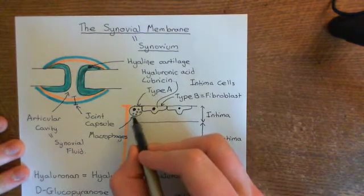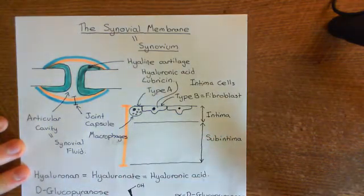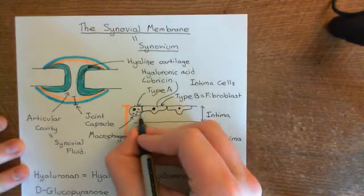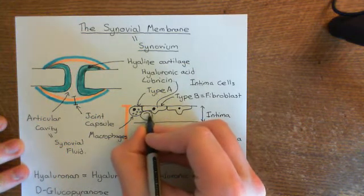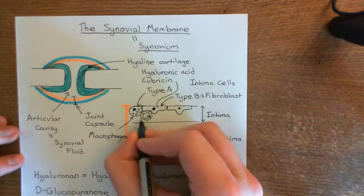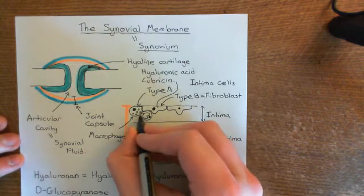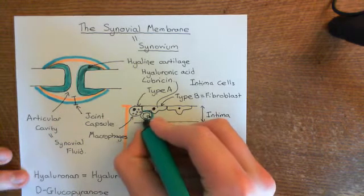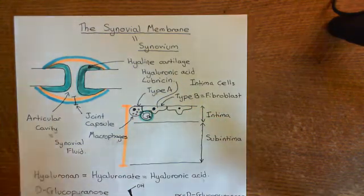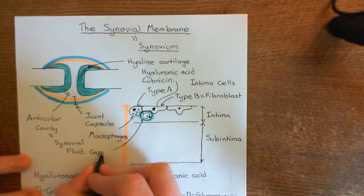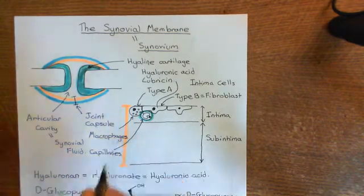Their mitochondria are very prominent, so you see these little dots within them. What other structures are important in the intima of the synovial membrane? You're also going to have a rich capillary bed. Capillaries are the most tiny of blood vessels — they're one cell thick. The wall of a capillary consists of a single endothelial cell sat on a basement membrane. I'll put a turquoise layer underneath the endothelial cell to show the basement membrane. These are supplying blood to the tissues of the intima.